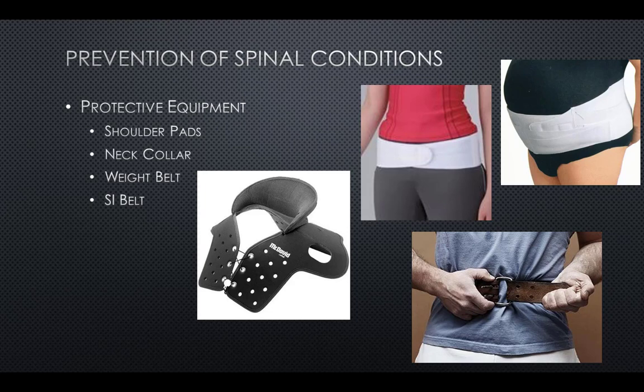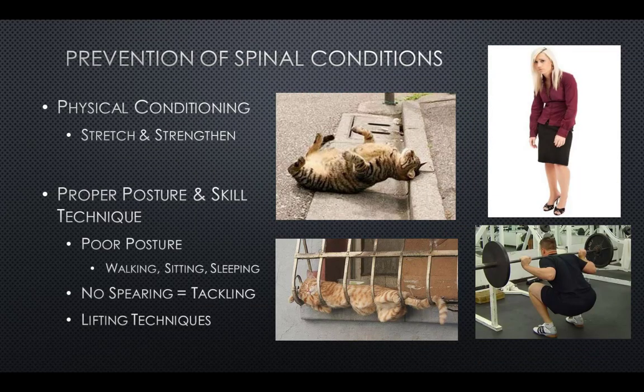Protective equipment may assist in decreasing spinal conditions, including shoulder pads, neck collars, weight belts, and SI belts. Focusing on physical conditioning — including stretching and strengthening of muscles — and teaching proper posture and skill techniques may also assist in the prevention of spinal conditions.